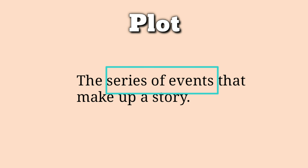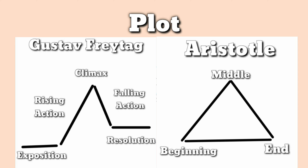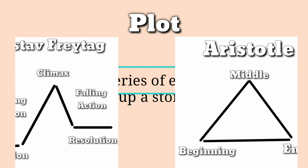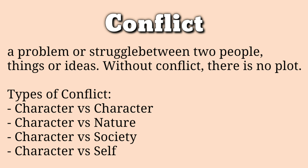Next, we have plot. Plot is a series of events that make up a story — the events in the story. I've already discussed this in my previous video. The Exposition, Rising Action, Climax, Falling Action, and the Resolution by Freytag — the Freytag Pyramid. Or you can use the beginning, middle, and end by Aristotle. So plot is a series of events in a story.